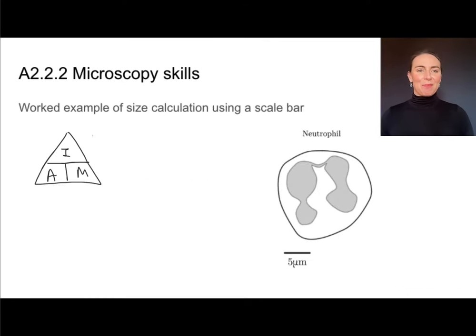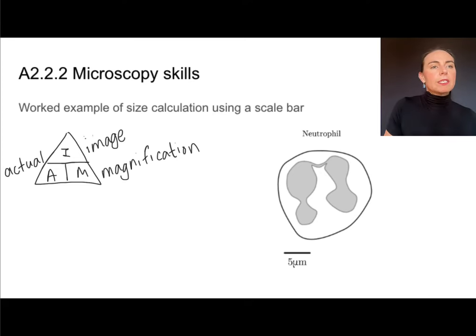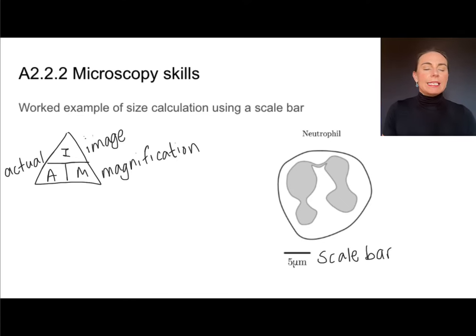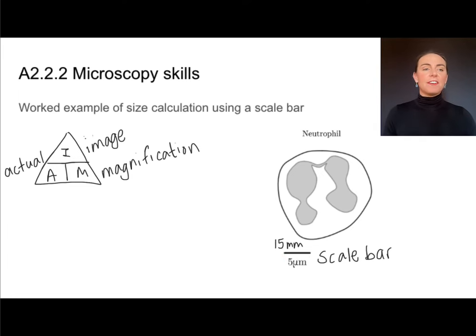Let's do a worked example. I like to use what's called the magnification triangle, which tells me what I need to do mathematically in order to find something. Let's start with a scale bar. We will see scale bars on a lot of different images — they are lengths that represent a distance in real life. To use them, I would measure the length of the scale bar with my ruler, and in this case I find that it is 15 millimeters in the size of my image.